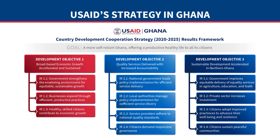After learning about USAID's current activities on the Ghana mission webpage, the organizations read about the mission's Country Development Cooperation Strategy, or CDCS, which helps them understand the mission's plans and goals. The CDCS shows an overall goal at the top, plus three development objectives, with related results under each objective that explain exactly what the mission is hoping to achieve.